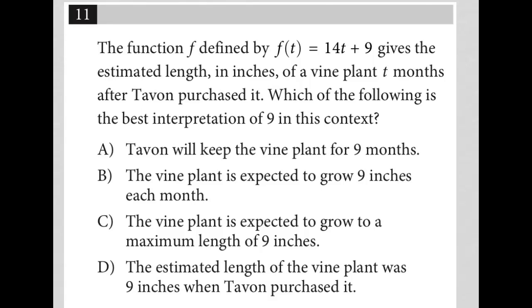This question says the function f defined by f(t) = 14t + 9 gives the estimated length in inches of a vine plant t months after Tavon purchased it.